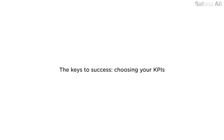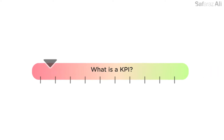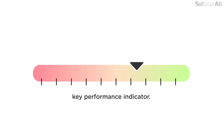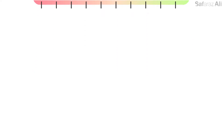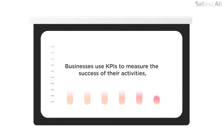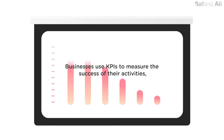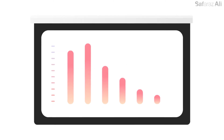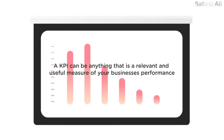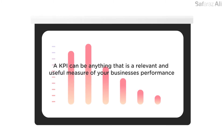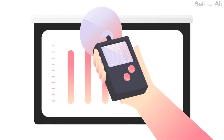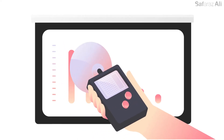Keys to success: choosing your KPIs. What is a KPI? KPI stands for key performance indicator. Businesses use KPIs to measure the success of their activities, but they don't have to be one specific thing. A KPI can be anything that is a relevant and useful measure of your business performance.